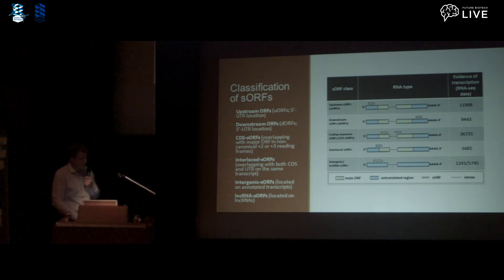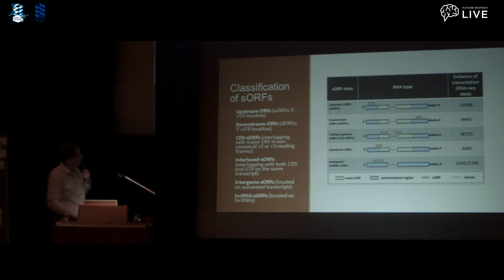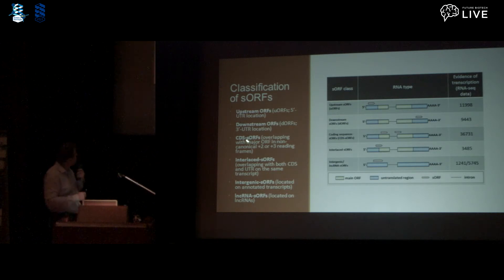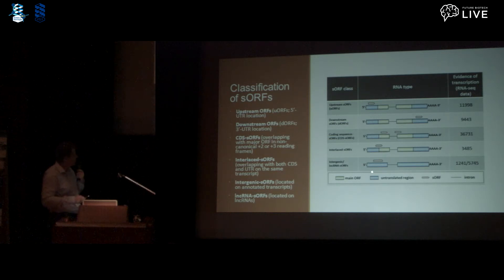We classified the sORFs using the following scheme: upstream sORFs located in untranslated 5' leader sequences; downstream sORFs located in 3' trailer sequences of mRNA; CDS sORFs overlapping with protein-coding sequences; interlaced sORFs overlapping with both protein-coding sequences and untranslated regions; and intergenic and long non-coding RNA sORFs located on annotated transcripts and long non-coding RNAs.